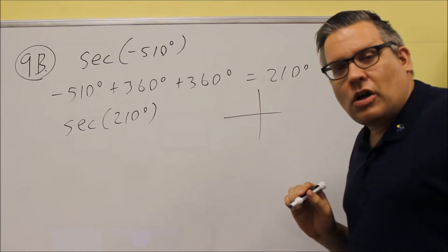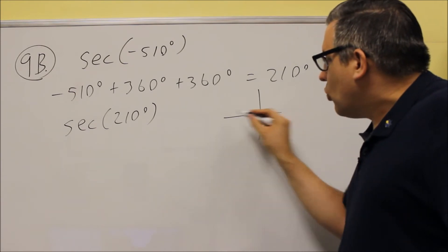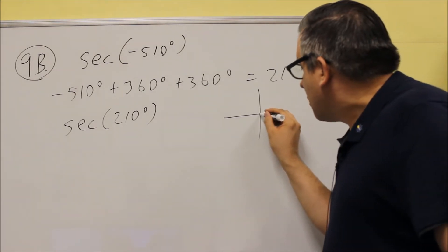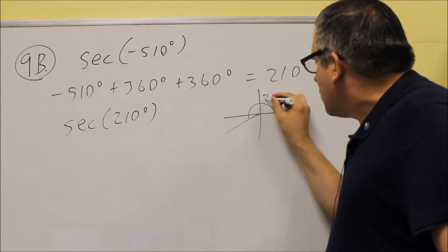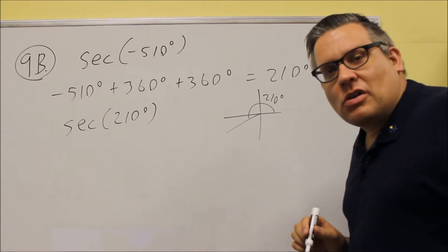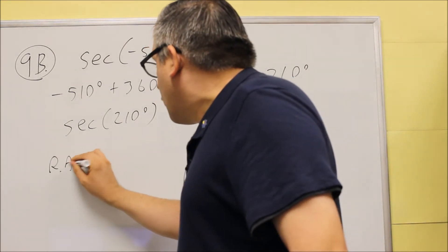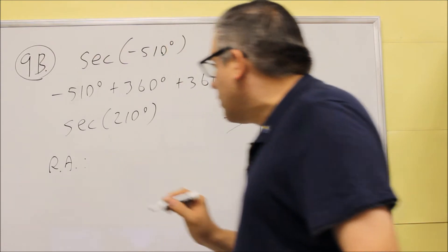So I'm going to draw this out in standard position. So that's going to be between 180 and 270. It's going to be a little bit closer to 180. So in standard position, 210 degrees would look like that. It ends up in the third quadrant. So when I do my reference angle formula, my reference angle formula is, in the third quadrant, is theta minus 180.